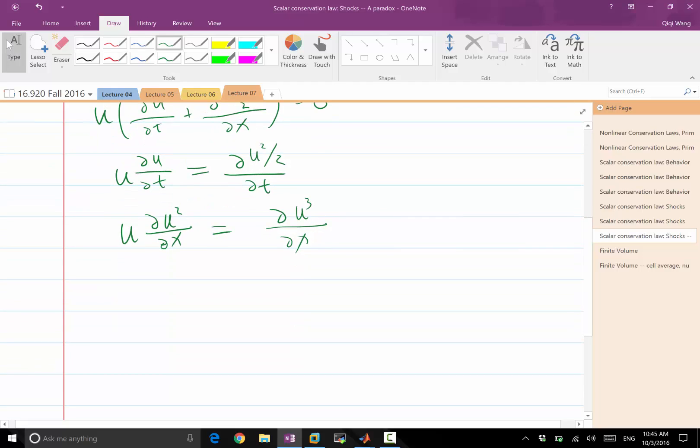Let me derive it. ∂U³/∂x equals the derivative of U times U² with respect to x. Now expand it. This equals U times ∂U²/∂x plus U² times ∂U/∂x.